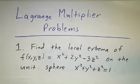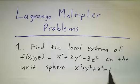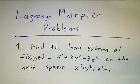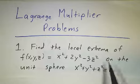Last time we talked about the theory of Lagrange multipliers. This time we're going to work some problems. The first problem is we're sitting on the unit sphere, x squared plus y squared plus z squared equals 1, and we want to maximize the function x squared plus 2y squared minus 3z squared. In fact, we want to find all the local extrema.